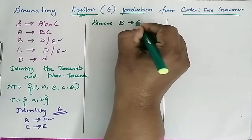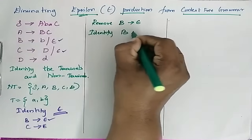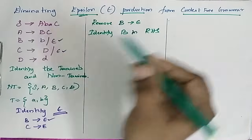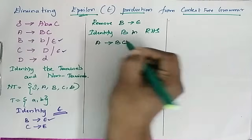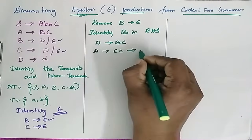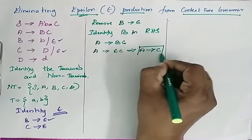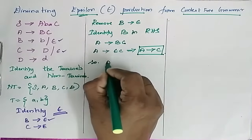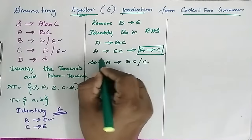To remove B → ε, identify B in the right-hand side. We have A → BC. When we substitute epsilon for B, we get A → εC, which implies A → C. So now A becomes BC | C.